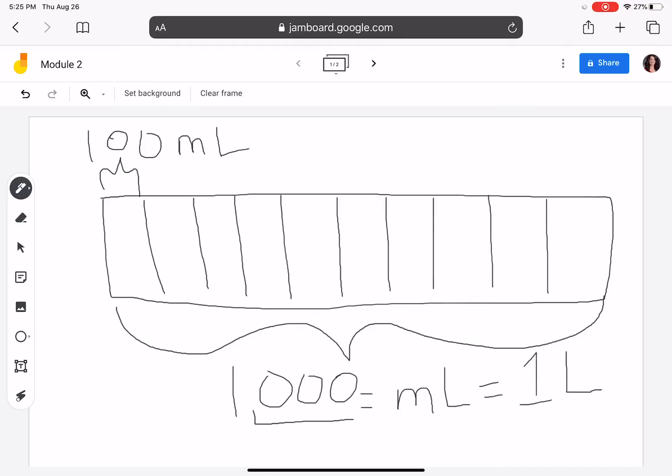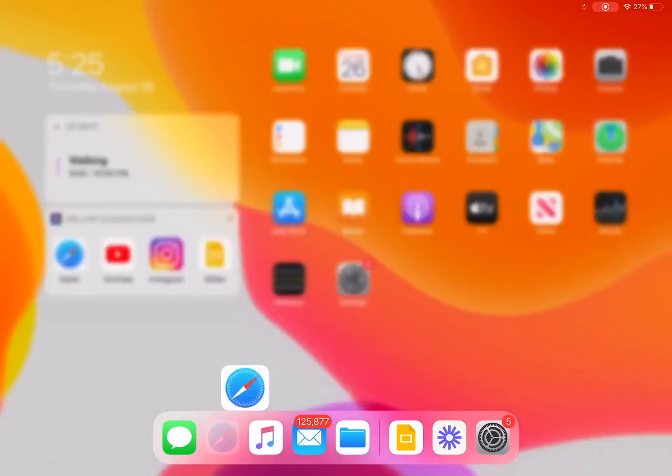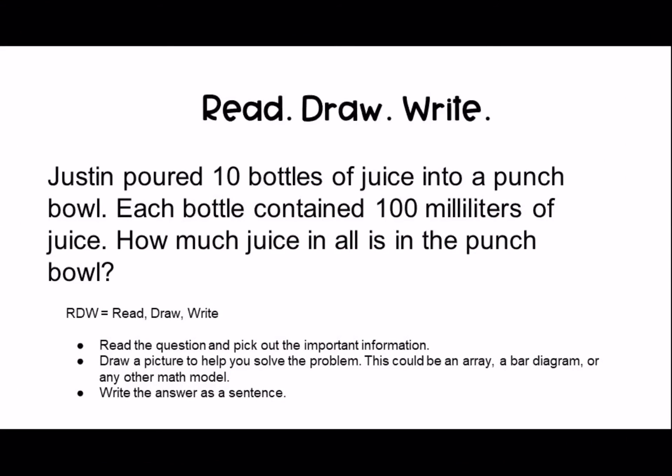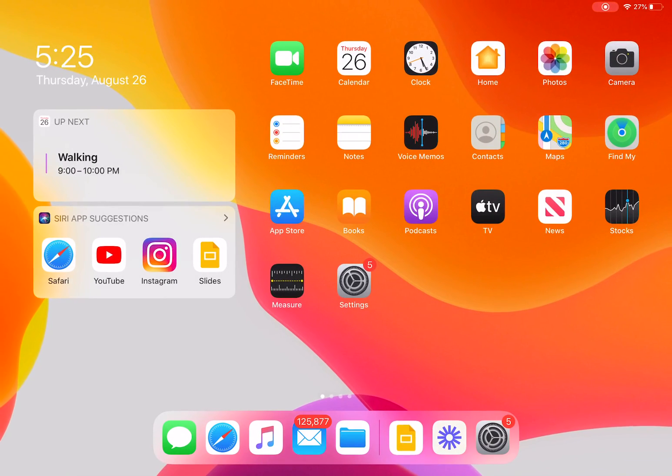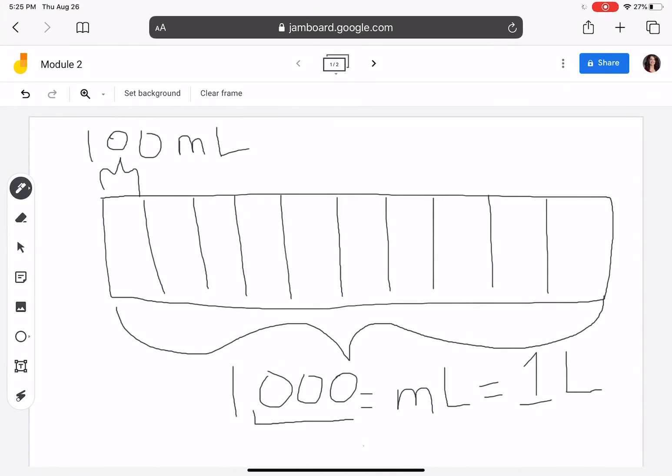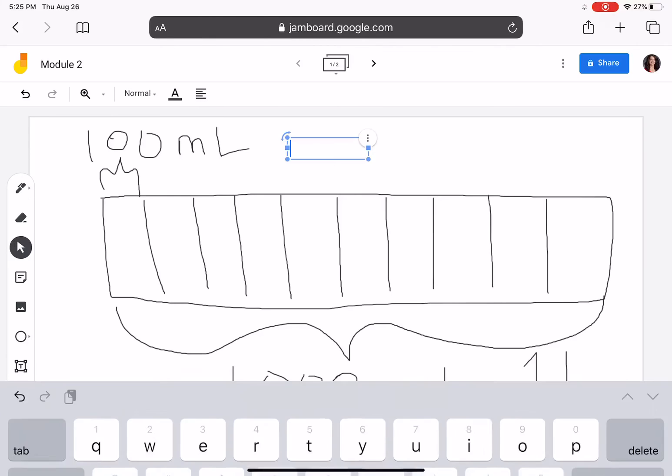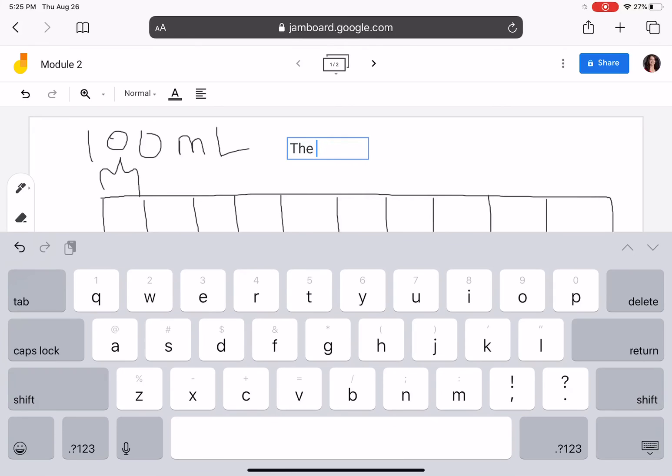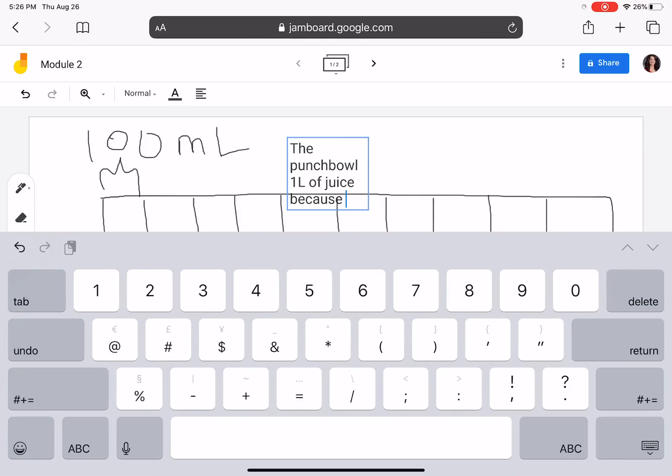Okay, I've drawn my model. Let's go back to the question. The final step is to write the answer as a sentence. We want to use information from the question in our sentence. The question is, how much juice in all is in the punch bowl? I'm going to say the punch bowl contains one liter of juice because 10 times 100 equals 1000.